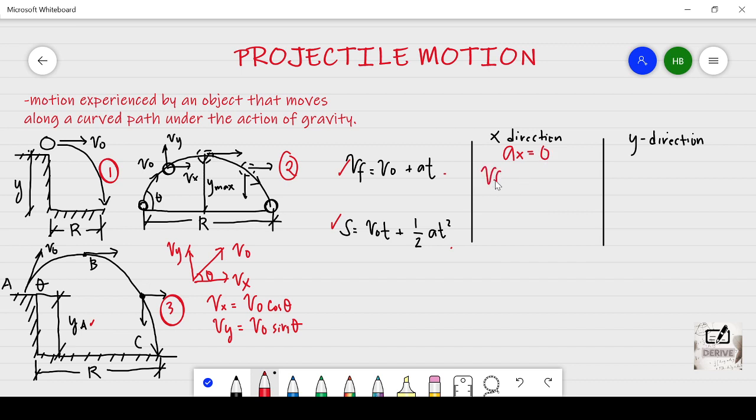So A_X is equal to 0. Just copy the formula and put V_X, V_0X because it's X direction plus A_X times T. And your A_X is equal to 0 because your velocity is constant. Of course, your final velocity is equal to initial velocity. And on the displacement, just equate A_X equal to 0, then you will have S is equal to initial velocity times time. I will also write here that V_X is V_0 cos theta if you are going to use it on the second and third scenario with angle theta.